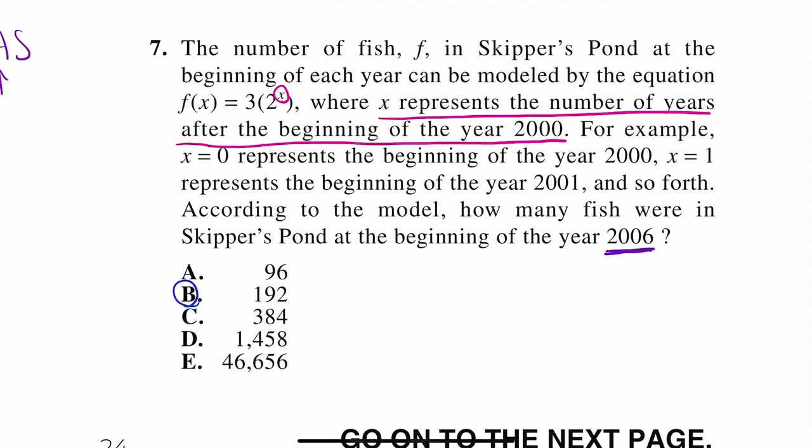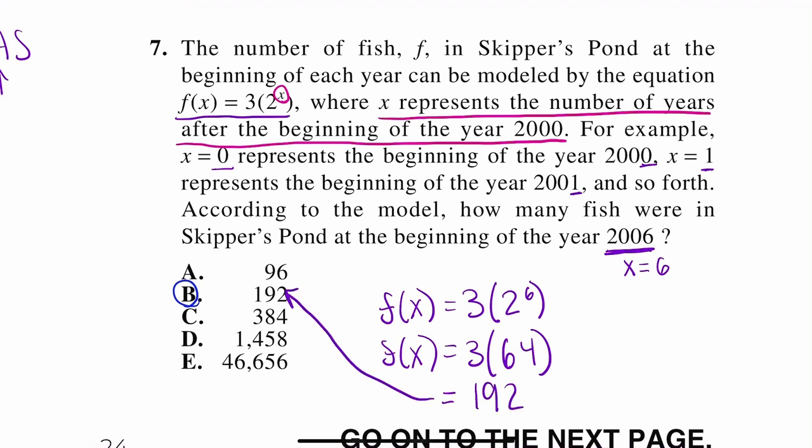So, since it's 2006, that means our x is equal to 6. Because, look, it said x is 0 when it's 2000, and x is 1 when it's 2001. So, let's take this equation. We have f(x) = 3(2^6). And now, all you have to do is solve that. You can plug it straight into your calculator, or you can do your math here. So, 2 to the 6th power is 64. And 64 times 3 is 192, which is letter B.